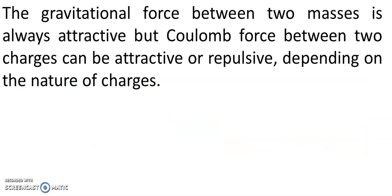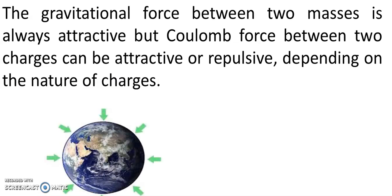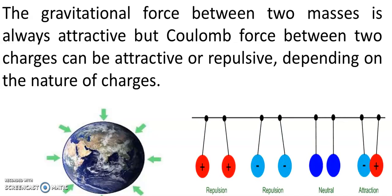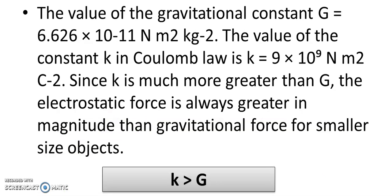The gravitational force between two masses is always attractive, but Coulomb's force between two charges can be attractive or repulsive depending on the nature of the charges. The value of gravitational constant G is 6.626 into 10 to the power of minus 11 Newton meter square per kg square, whereas the value of Coulomb's proportionality constant K is 9 into 10 to the power of 9 Newton meter square per coulomb square. Hence, it is proved that the proportionality constant K is very much greater than G, and since K is much greater than G, the electrostatic force is always greater in magnitude than gravitational force for smaller size objects.